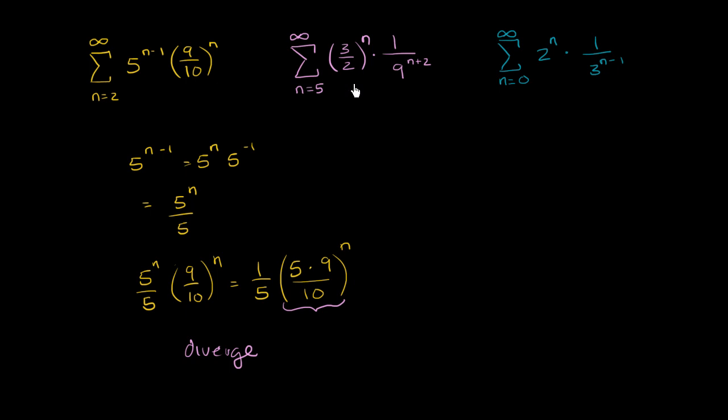Now let's think about this one over here. Once again, I encourage you to pause it if that one helped you a little bit. Let's try to rewrite this in a way that the common ratio is a little bit more obvious. So 3 halves to the n times 1 over 9 to the n plus 2. We could think about this as 3 halves to the n times 1 over 9 to the n times 9 squared.